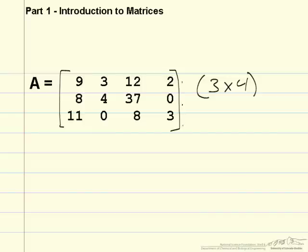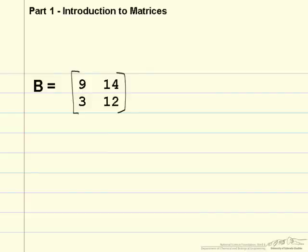If a given matrix has the same number of rows as it does columns, it's called a square matrix. This is matrix B. B is a 2 by 2 square matrix. Square matrices are useful in that you can do specific calculations with them that you are unable to do with other matrices.